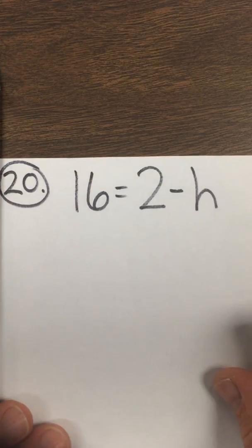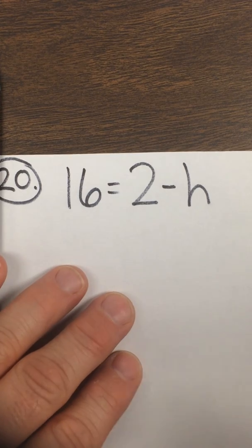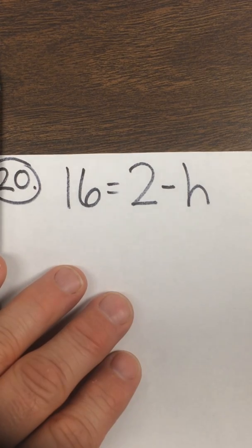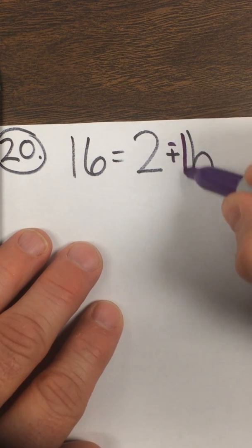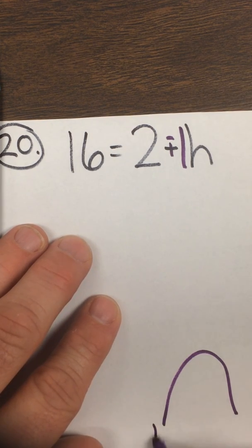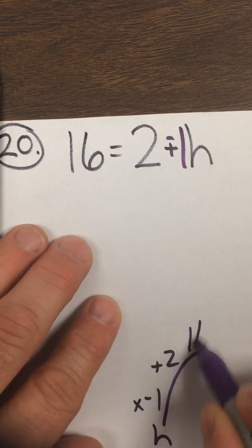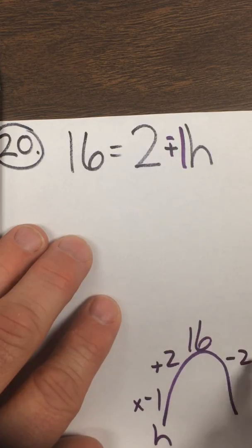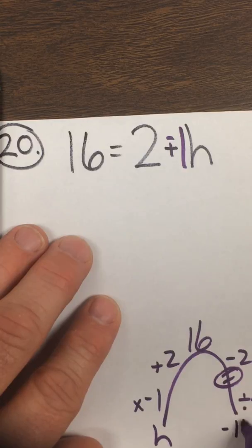Number 20. This looks ridiculously easy, and it is pretty easy. But people will mess it up because of the negative sometimes. Leave change opposite. How many h's is that? Well, there's an understood 1 there. So if I look at it as a two-step algebraic equation, there was this h that somebody took times negative 1, they added 2, and that got them to 16. So let's tear it back down: subtract 2 to undo that, hit equals on your calculator, divide by negative 1. 16 minus 2 is 14, and 14 divided by negative 1 becomes negative 14.